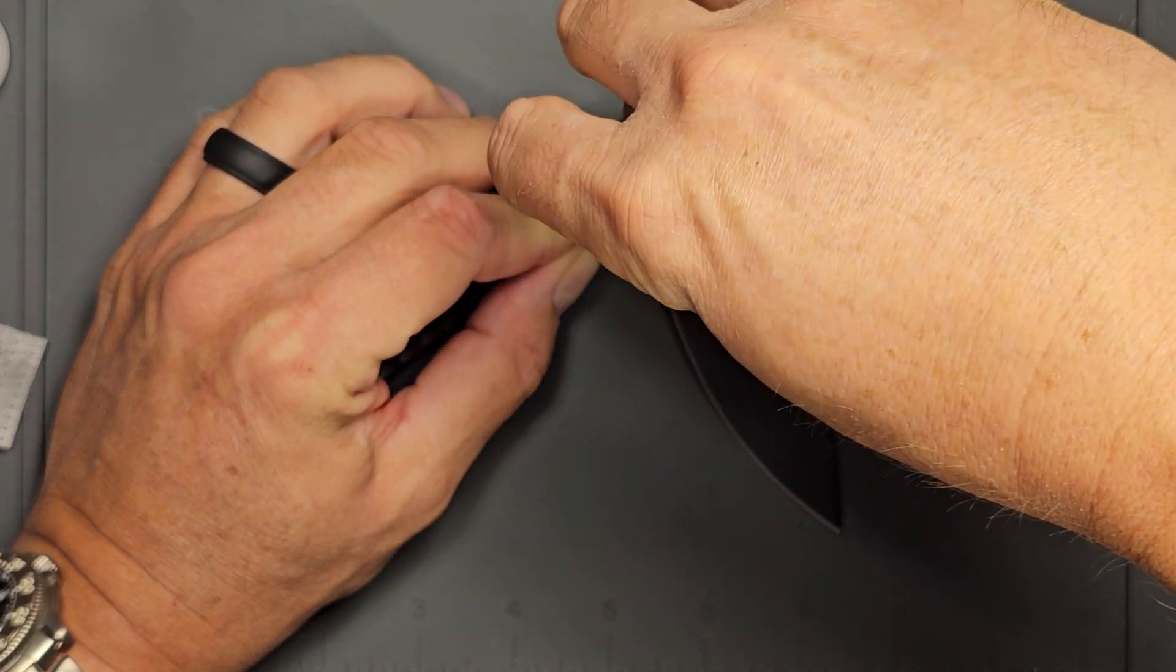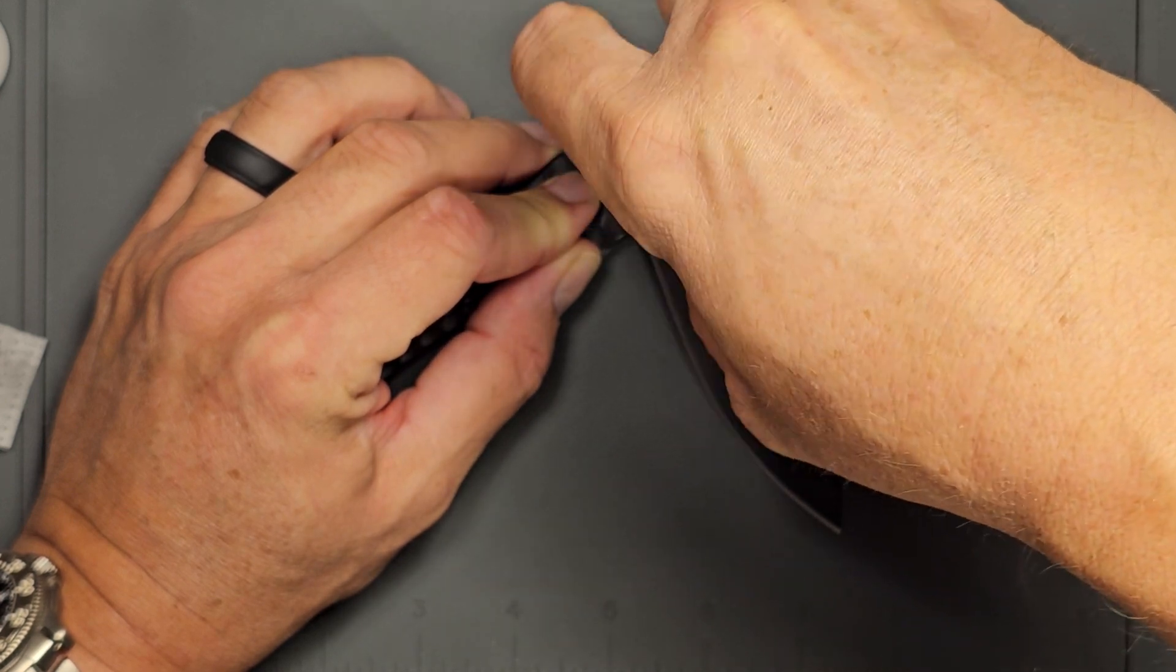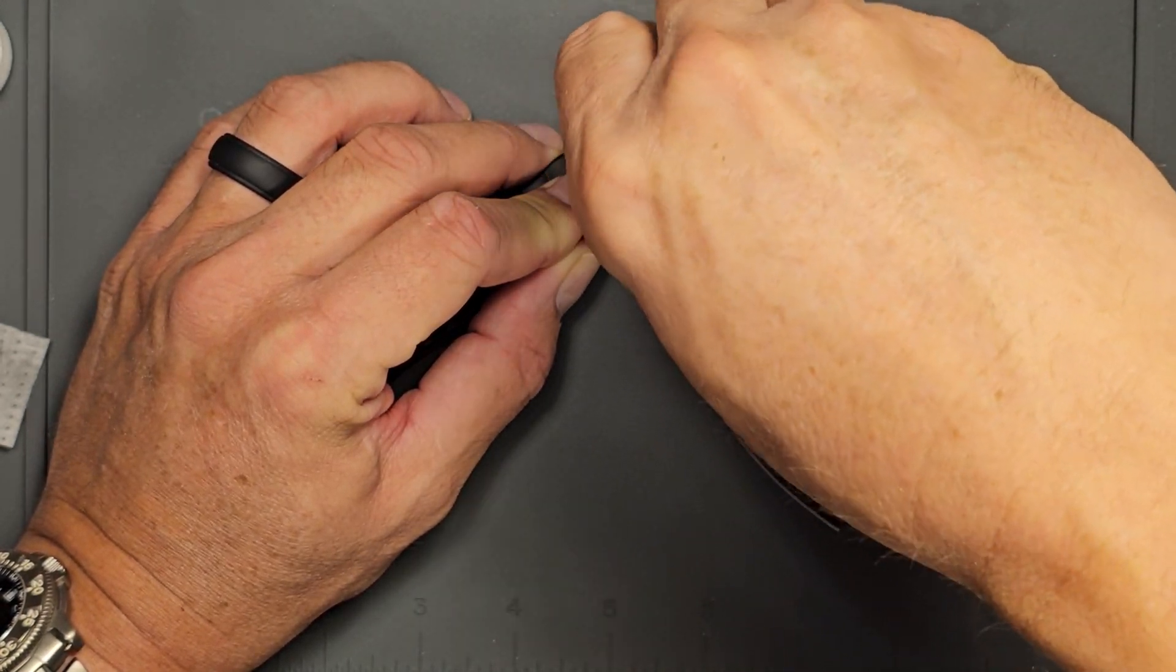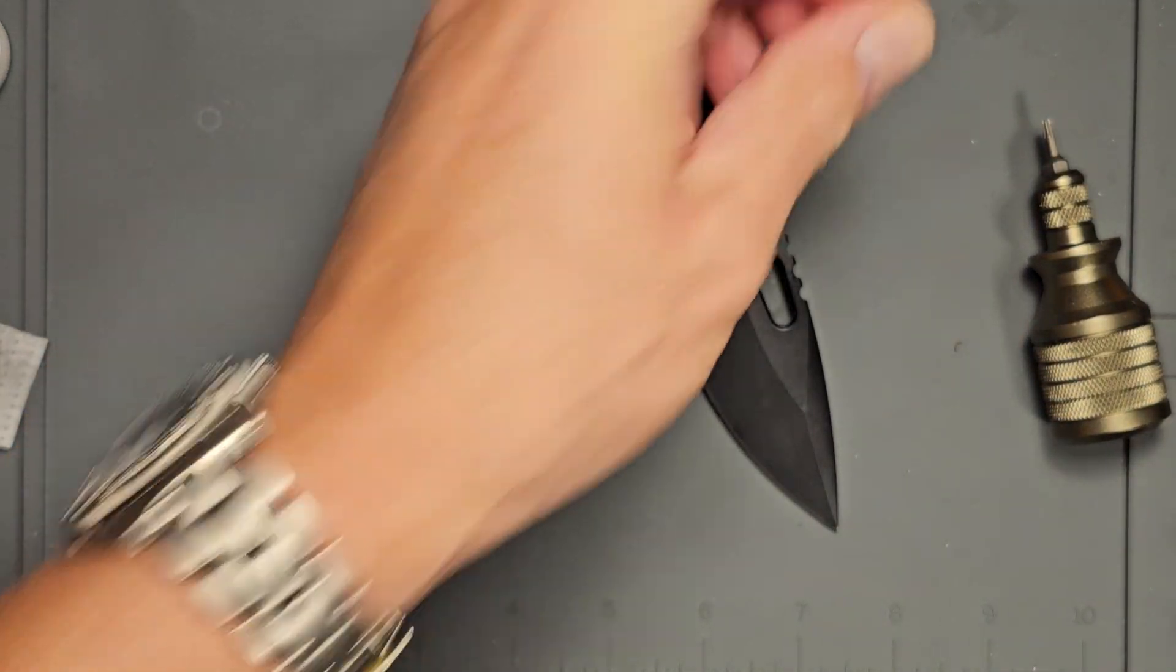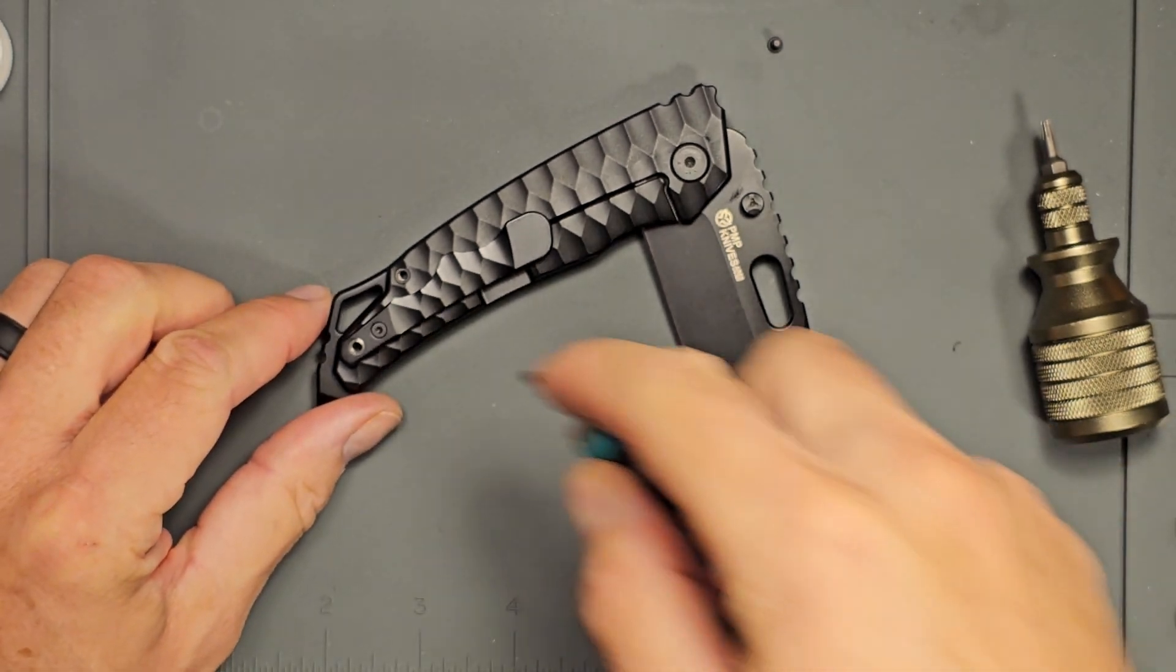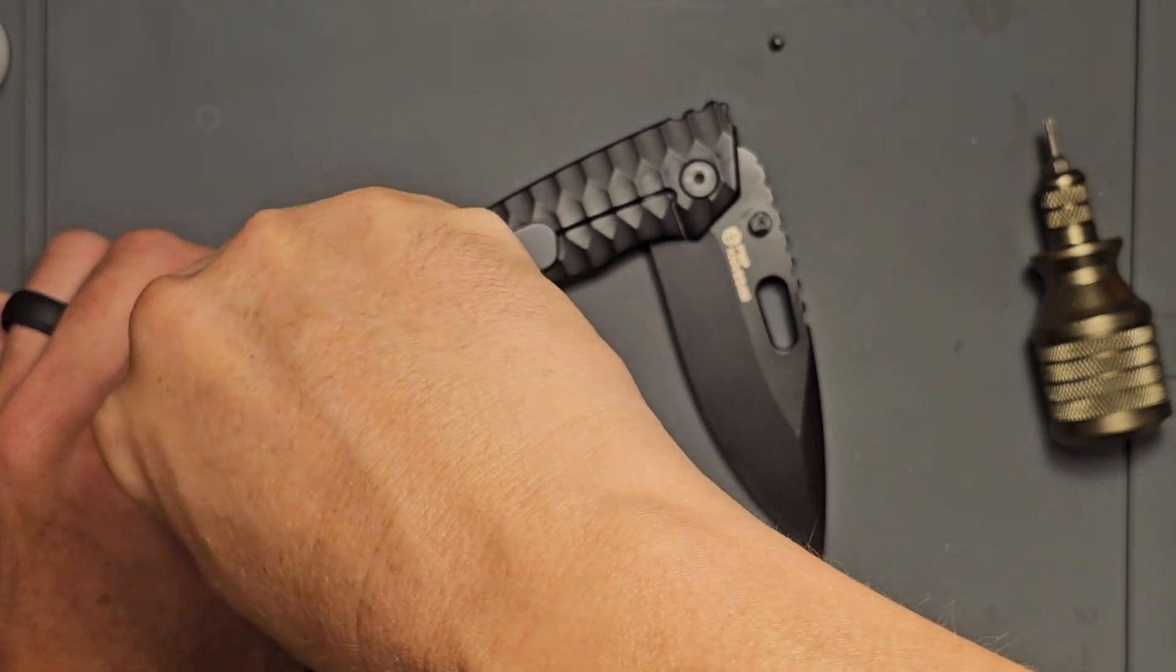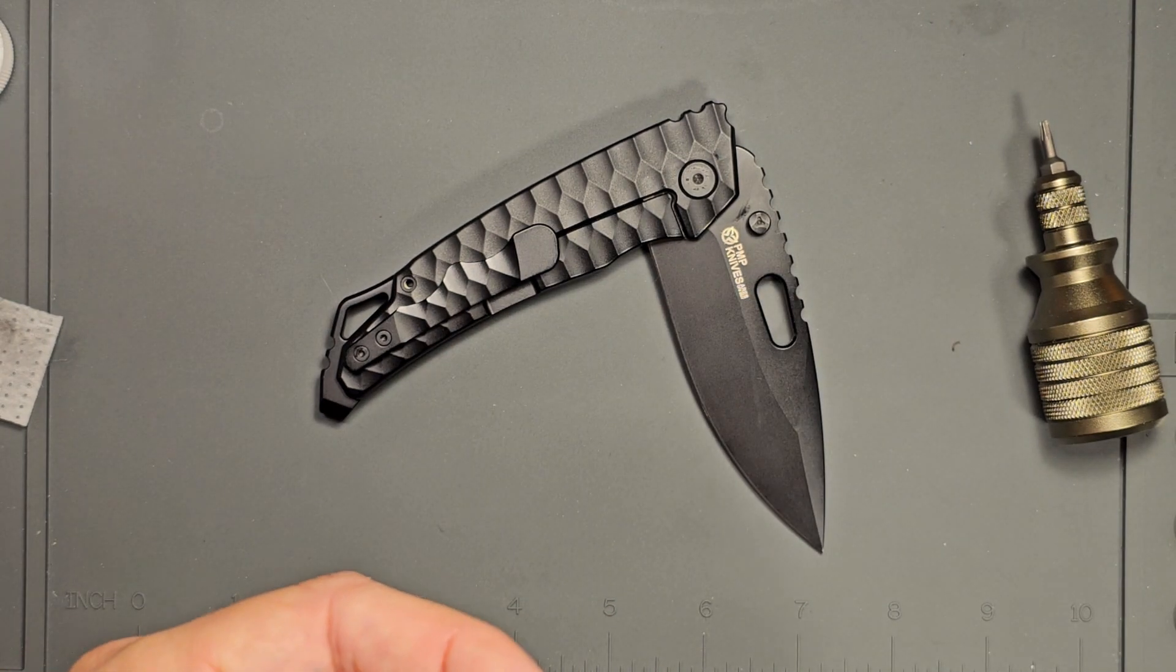I want to gently thread this pivot screw back on. I'm just going to snug it up. I don't want to put it too tight. We'll probably have to do some adjustment here momentarily. Let's get the screw back in, the clip, and then also this body screw.